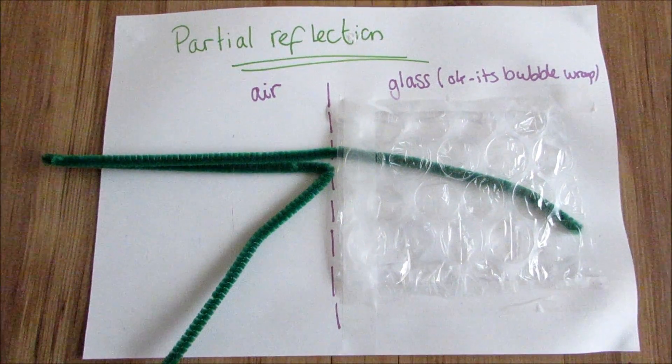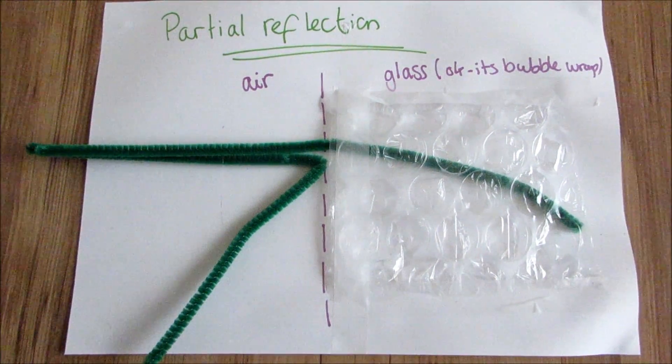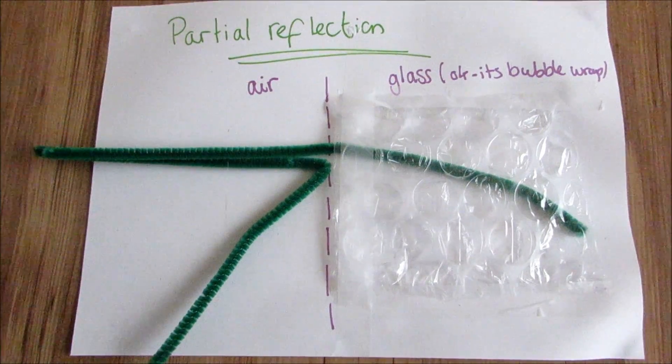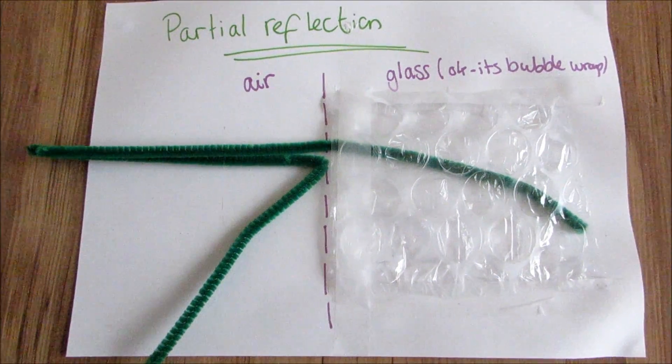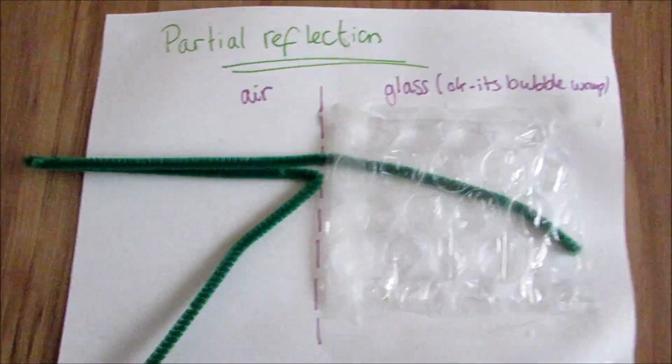And what it does is it changes direction at the boundary. Some of the sound is reflected back on itself. And some of the sound is transmitted and refracted once it goes through the boundary.